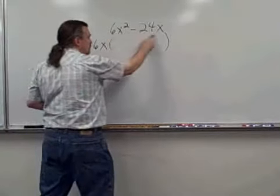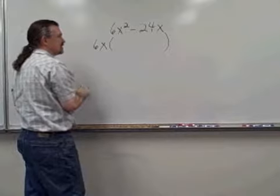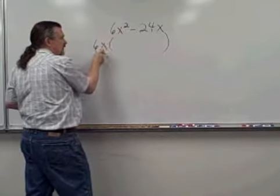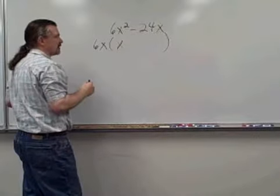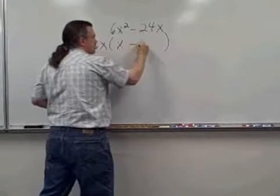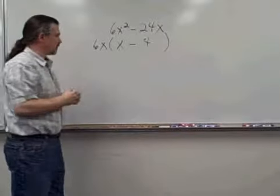So we can take each of these terms and divide by 6x. 6x squared divided by 6x is going to just leave x to the first power. Minus 24x divided by 6x is going to leave minus 4.